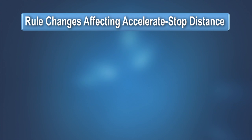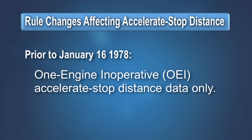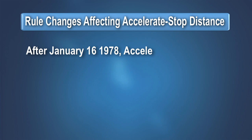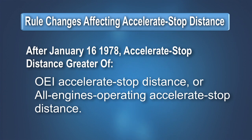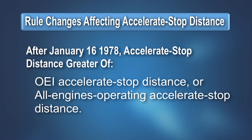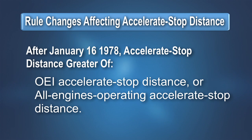Originally, the accelerate stop distance did not include consideration for events other than engine failure that could lead to a rejected takeoff. In 1978, the certification rules were amended to consider both engine failure and non-engine failure scenarios. Accelerate stop distance was revised to be the longer of the distance with one engine failing just prior to V1 or with all engines operating throughout the rejected takeoff. However, accelerate stop distance was still determined only for a dry runway.